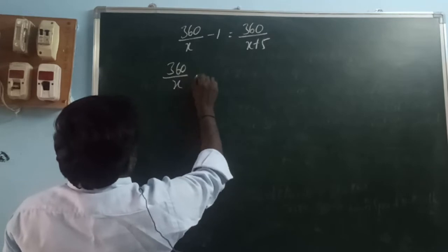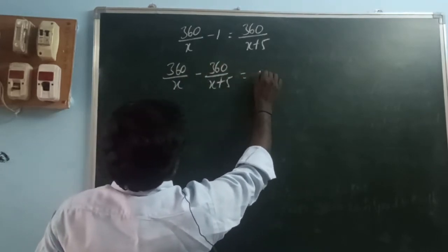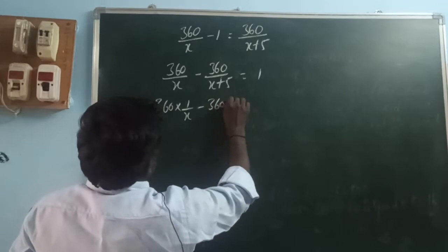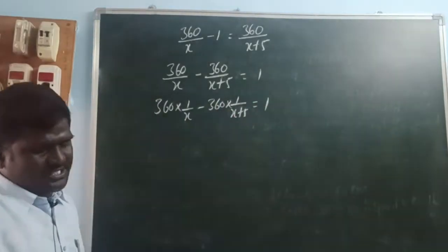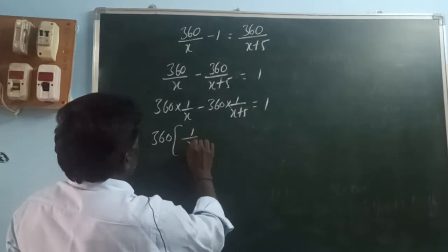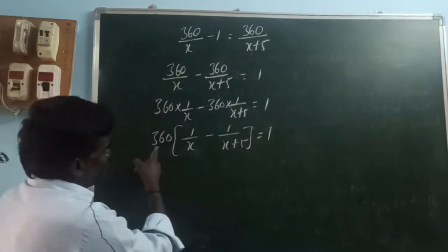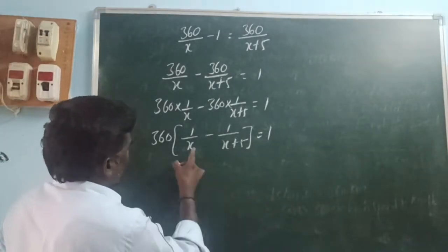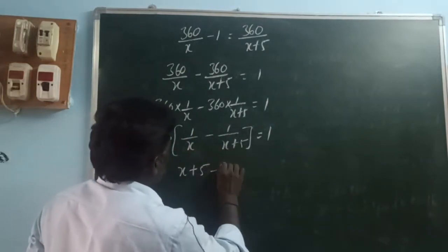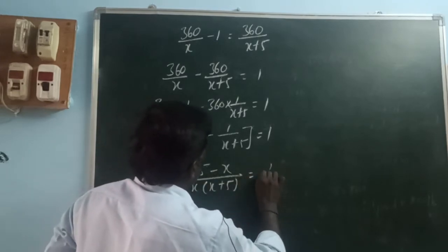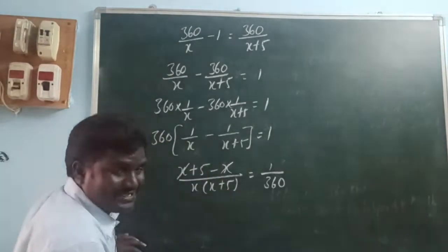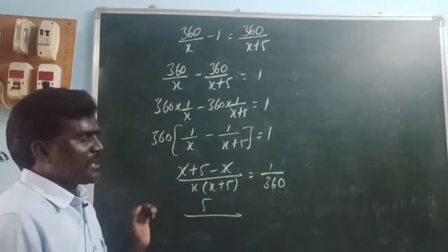So here 360/x minus 360/(x+5) equals 1. We can write this as 360 times (1/x minus 1/(x+5)) equals 1. Taking 360 as common, we get 360 times (1/x − 1/(x+5)) = 1. Doing cross multiplication: (x+5 − x) divided by x(x+5) equals 1/360. So 5 divided by x(x+5) equals 1/360.